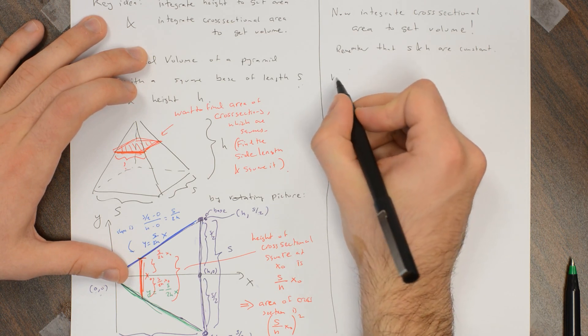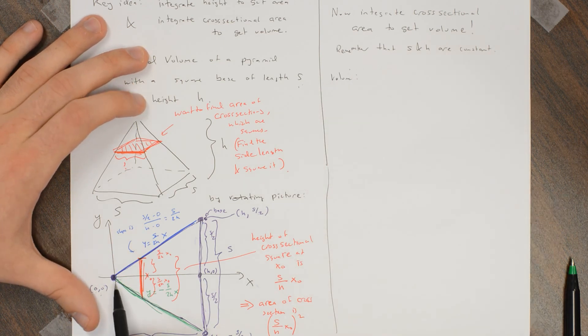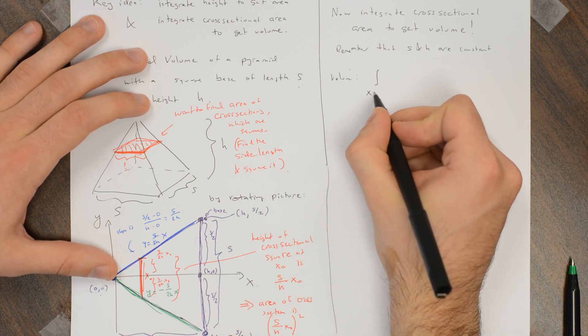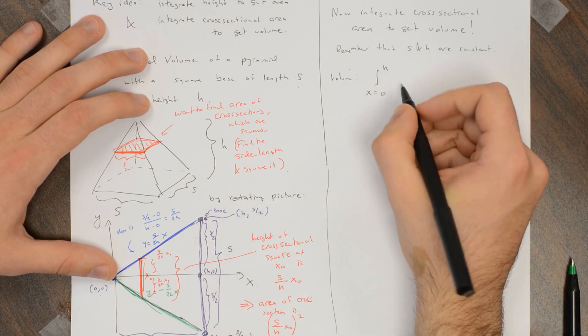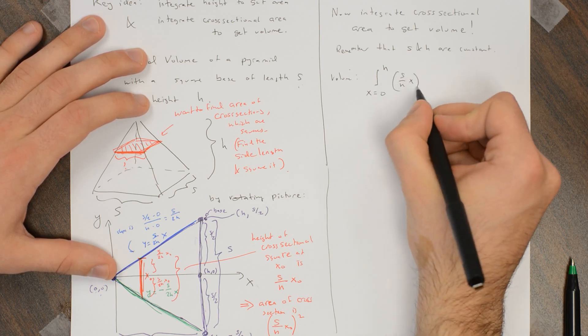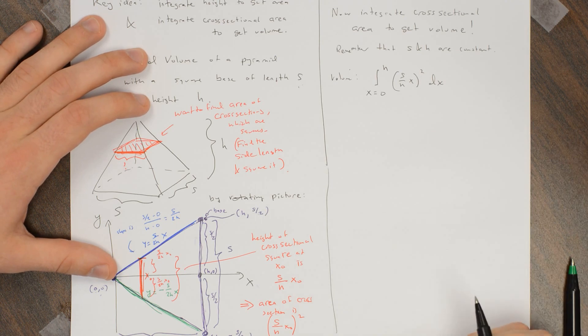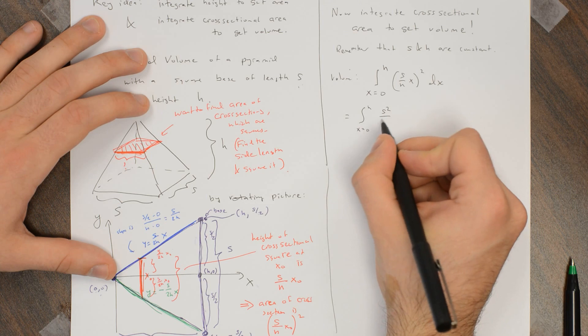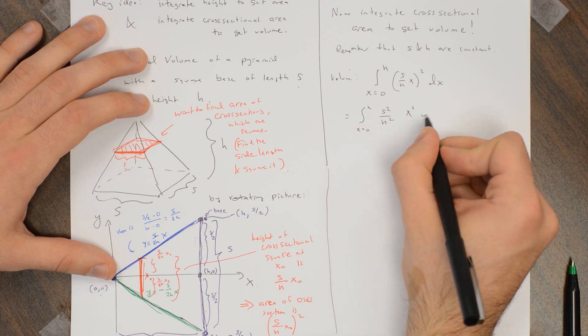So the volume is we integrate from the smallest x value of 0 to h. So this is the integral from x equals 0 to h of s squared over h squared times x squared dx.